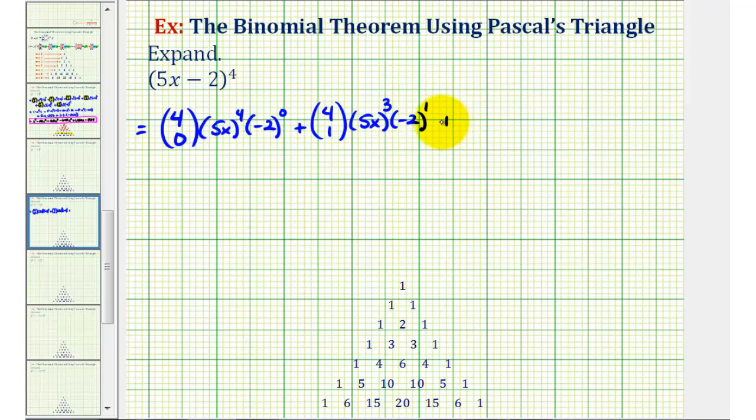And then for the third term, we'll have 4 choose 2, and then we'll have 5x to the second and negative 2 to the second. Notice if we add these exponents, each time they sum to 4, which is the original exponent on our binomial.